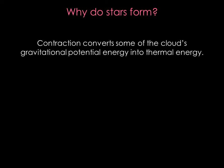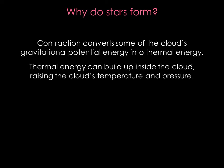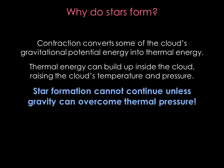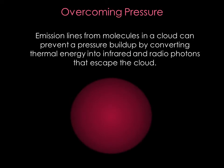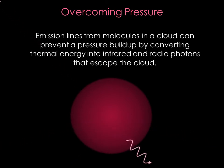The gravitational contraction also converts some of the cloud's gravitational potential energy into thermal energy. If the cloud cannot get rid of the thermal energy quickly, then it builds up inside the cloud, raising the cloud's temperature and thermal pressure, and eventually bringing the process of star formation to a halt. Molecular clouds can overcome this pressure by transforming the thermal energy into radio and infrared photons. As long as the photons can escape the cloud, the cloud's temperature can remain low and gravity can dominate over thermal pressure.